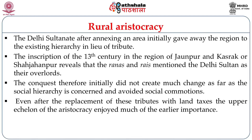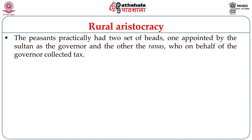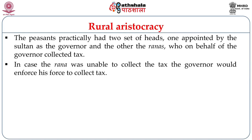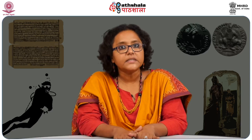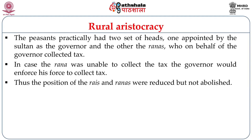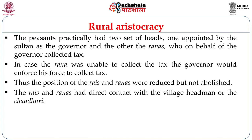Even after the replacement of tributes with land taxes, the upper echelon of the aristocracy enjoyed much of their earlier importance due to the caste system. The peasants practically had two heads: one appointed by the Sultan as the governor, and the other, the traditional head — the Ranas — who collected tax on behalf of the centre or governor. If the Rana was unable to collect tax, the governor would enforce his force to collect it. So practically, instead of one overlord, peasants now had two. The position of the Rais and Ranas was thus reduced but not abolished, and they had direct contact with the village headman or Chaudhuri, a term now coming into vogue.